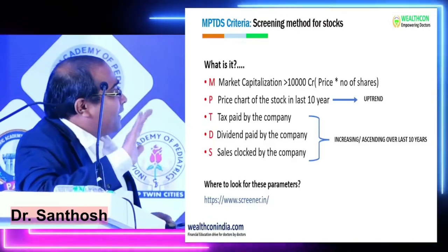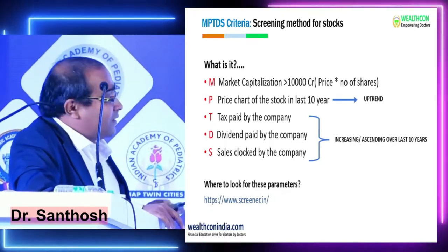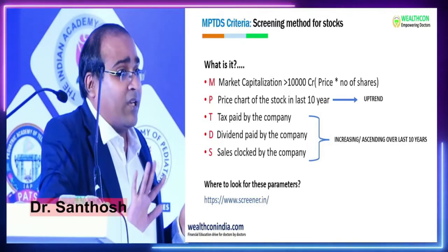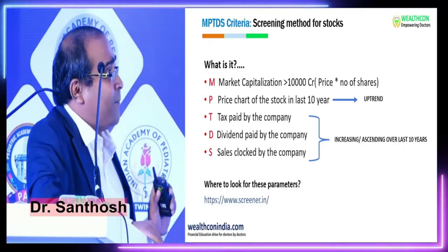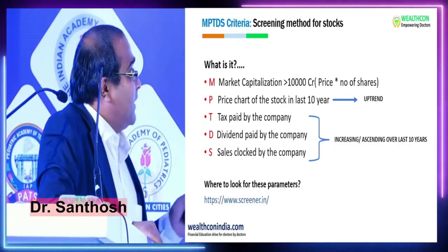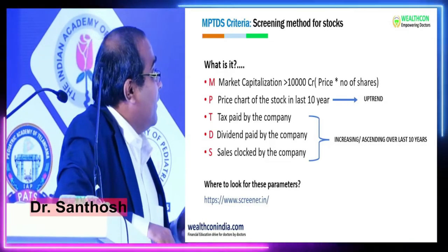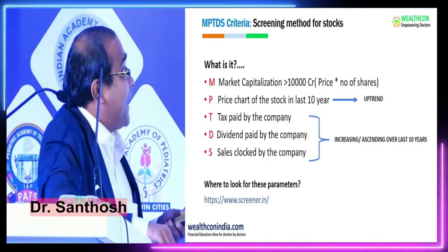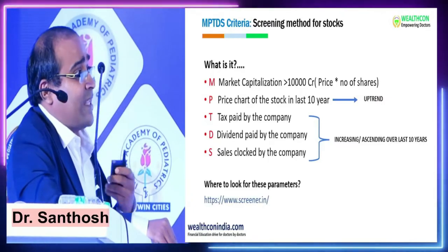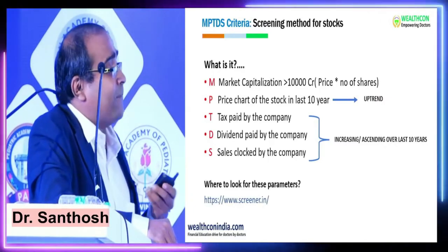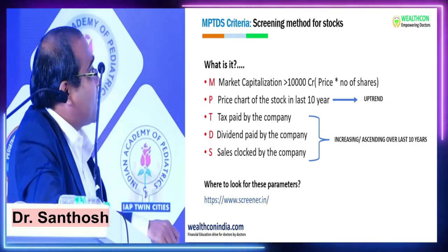To build a portfolio, we require 20 to 25 companies maximum. Out of 300 companies, we narrow down to 20 — we'll cover that. The second criterion in MPTDS is P for Price chart. The price chart over the last 10 years should be uptrending or ascending. In Gujarati they say 'bhav bhagwan che' — price tells everything. If the price is increasing, the company is good and making profit. Price reflects profit.